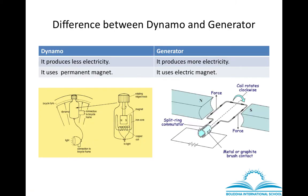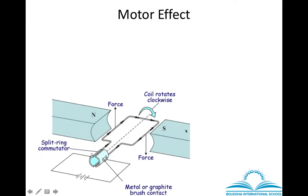There are four ways to increase current from a dynamo or generator: increasing the number of coils, using a stronger magnet, increasing the rotation speed of the magnet or coil, and keeping a smaller gap between the magnet and the coil. Now, the difference between dynamo and generator: though they have the same working mechanism, dynamos produce less electricity using a small permanent magnet, whereas generators can produce more electricity and use an electric magnet.